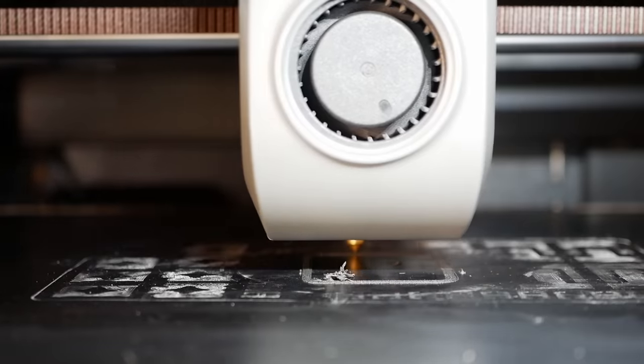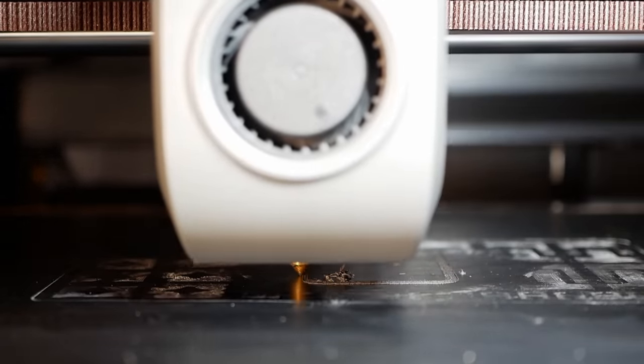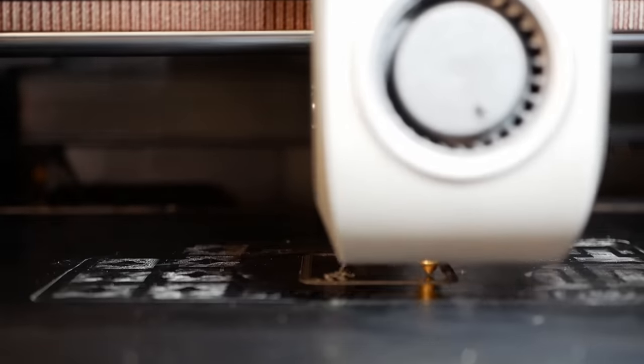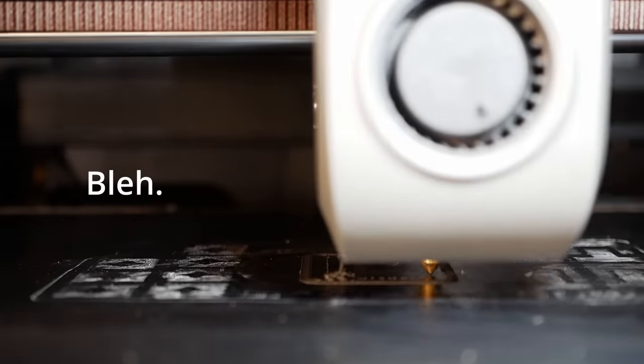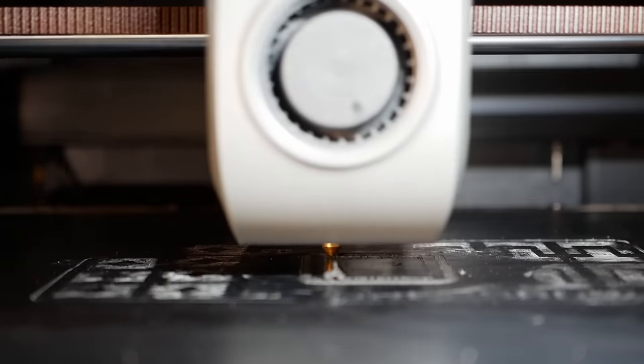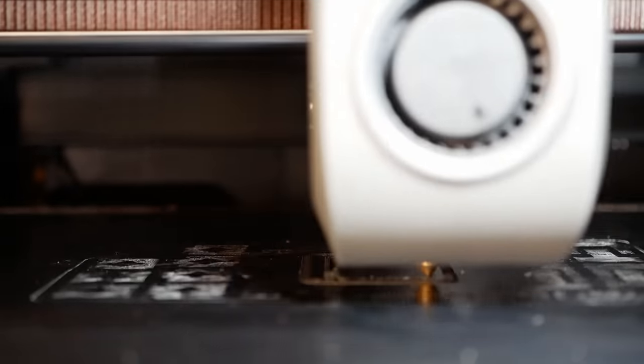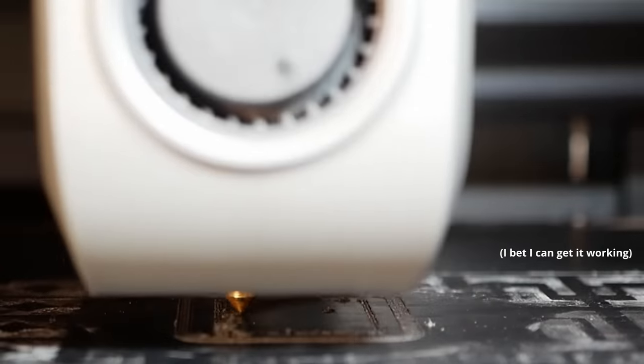So I printed VarioShore on the Sovol SV07. Well, not initially. I started printing it on the Creality K1, but that idea went out of the window pretty quickly. The K1, in my experience, is a great printer. There's a review coming soon, it's probably next video. But this is not a machine that excels with TPU, at least not at the moment, and not for 92a, which this filament states is the hardness of the reel.